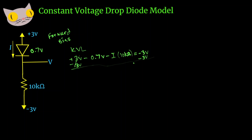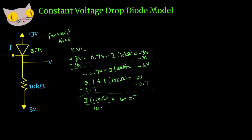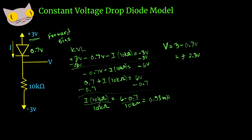Rearranging the equation: subtract negative 3 volts from both sides, which gives us negative 6. Change the signs to make it easier, subtract 0.7 from both sides, then divide by the 10k ohm resistor on both sides. This gives us 0.53 milliamps, just like the first one. And our voltage is going to be 3 minus 0.7 volts, which gives us positive 2.3 volts. And there we have it — our voltage and current for this diode circuit.